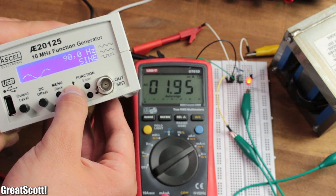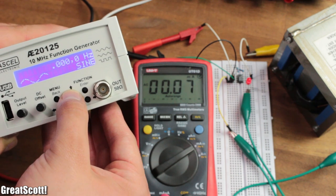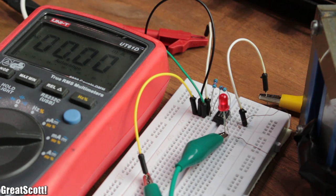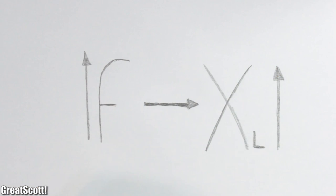Now I rise the frequency up to 10 kHz and we notice that the LED gets dimmer. So bigger frequencies means more reactance and thus less current flows.